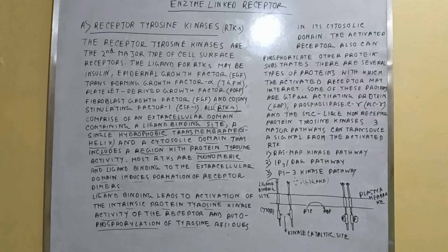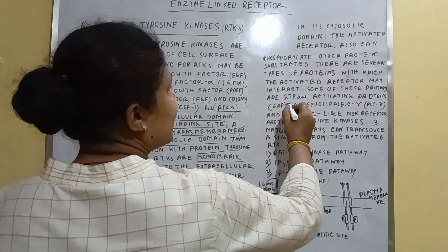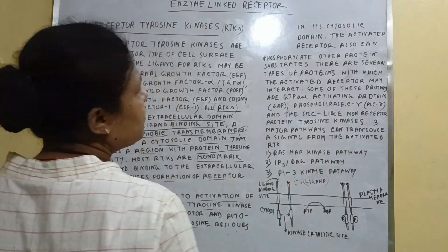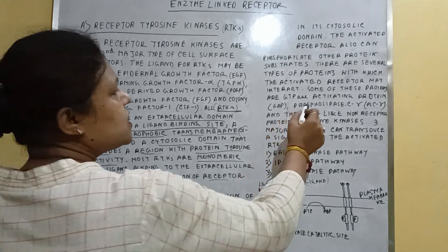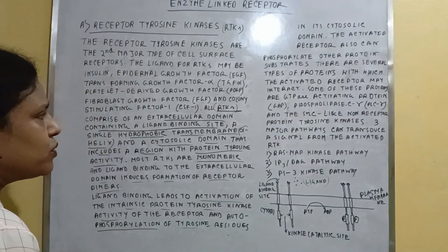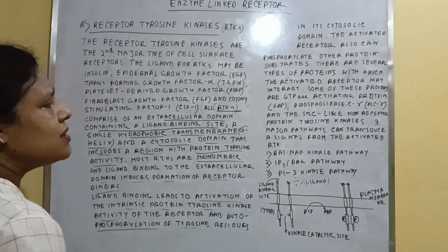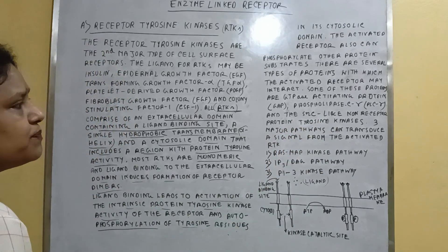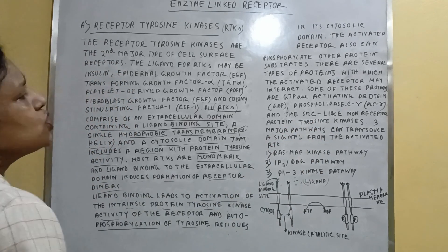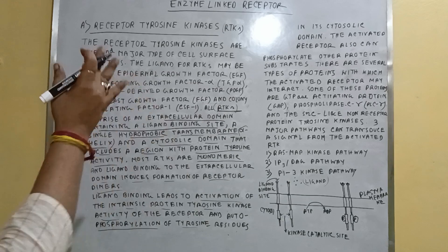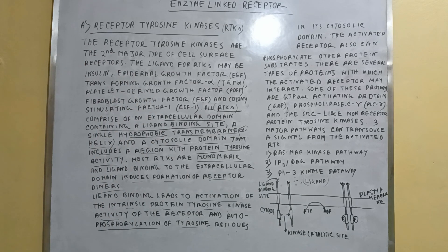Some of these proteins include the GTP-activating protein, or GAP, phospholipase C gamma (PLCγ), and the Src non-receptor protein tyrosine kinases.